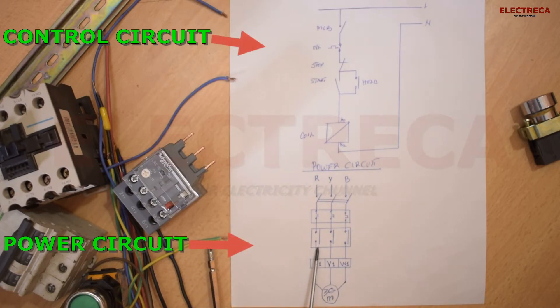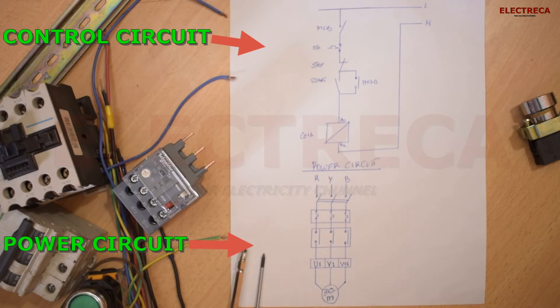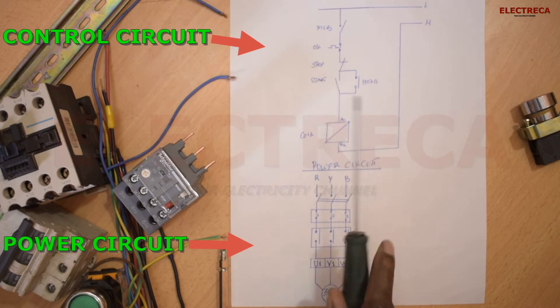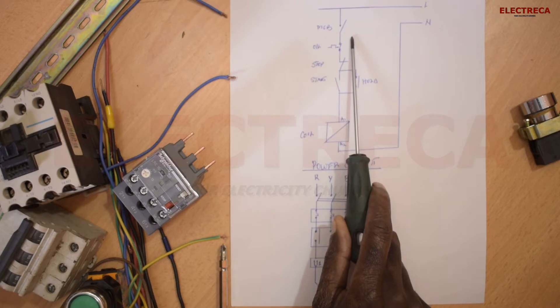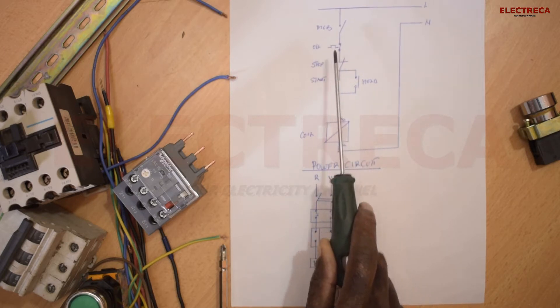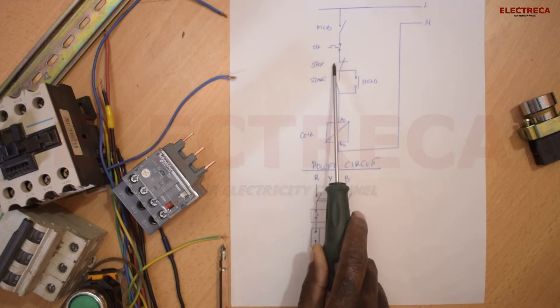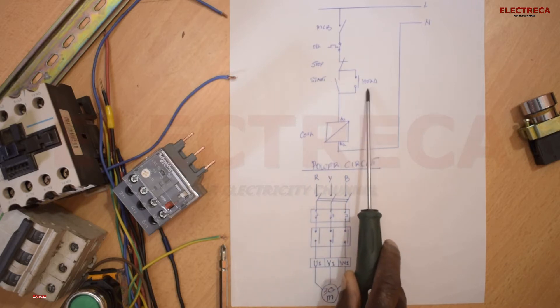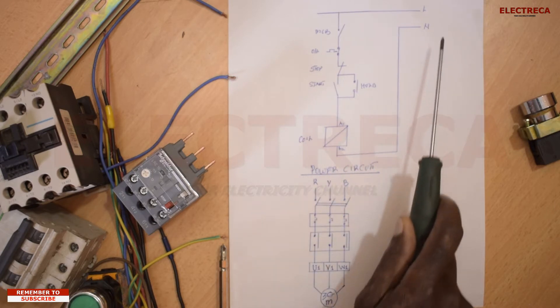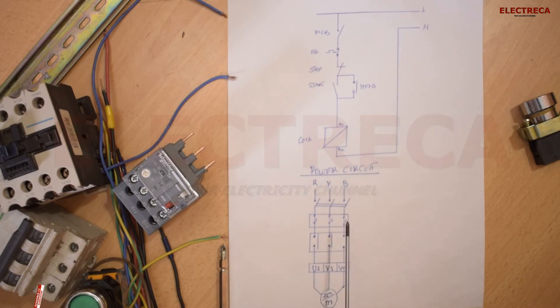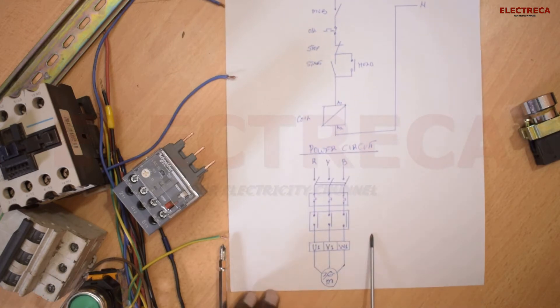Now I have two circuits here - we have got the control circuit and we have got the power circuit. Now our control circuit, if you see, comprises of this MCB, then you have your overload, then you have your stop, you have your start, you have your hold, then you have your coil. And then your control circuit takes a live and a neutral.